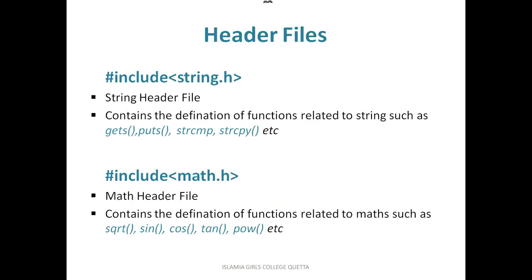The next is string.h. A string is the combination of characters — more than one character. So if we are using functions like gets, puts, strcmp, and strcpy, and many other string functions, these are present in the string.h header file and we have to include that file. You can include more than one file in your program — there is no restriction. You can also use math functions like square root, sine, cos, tangent, and power, but then you have to include the math.h header file because math.h contains the definitions of those functions.